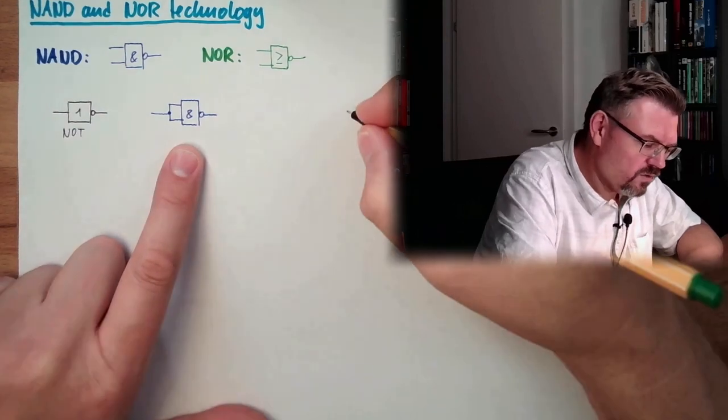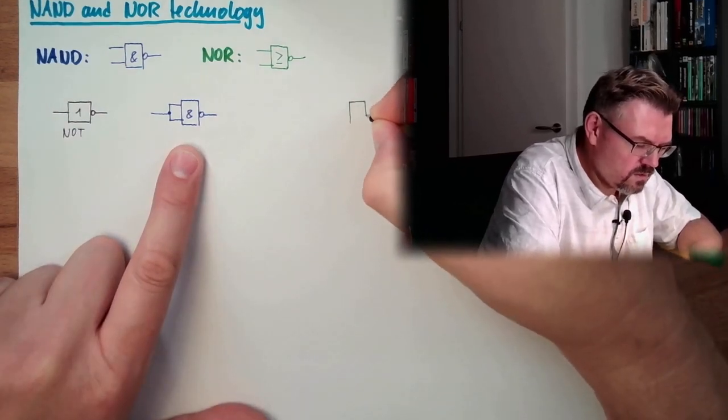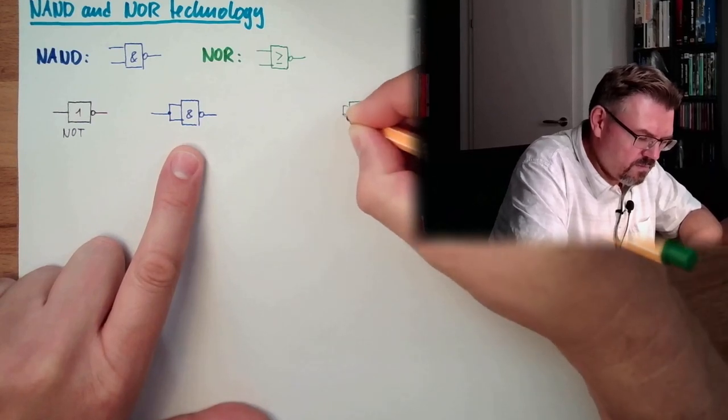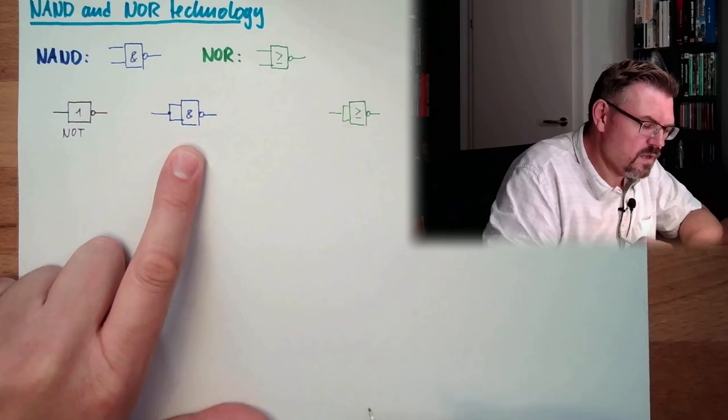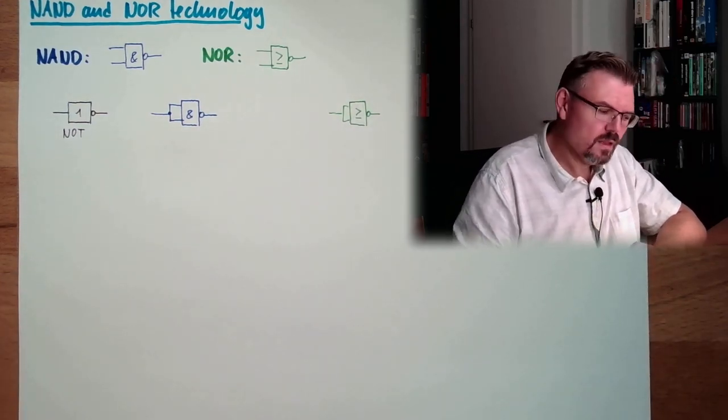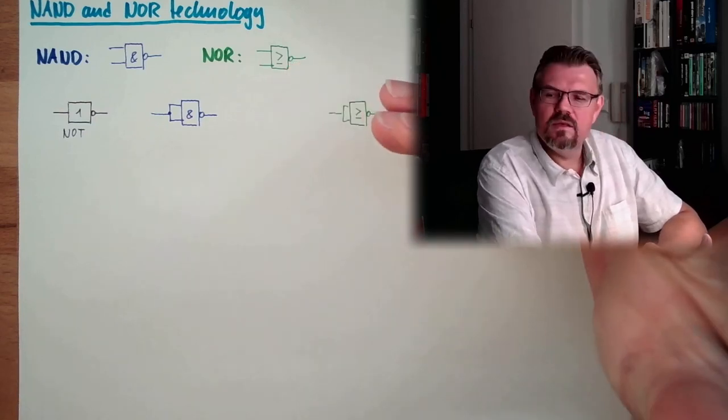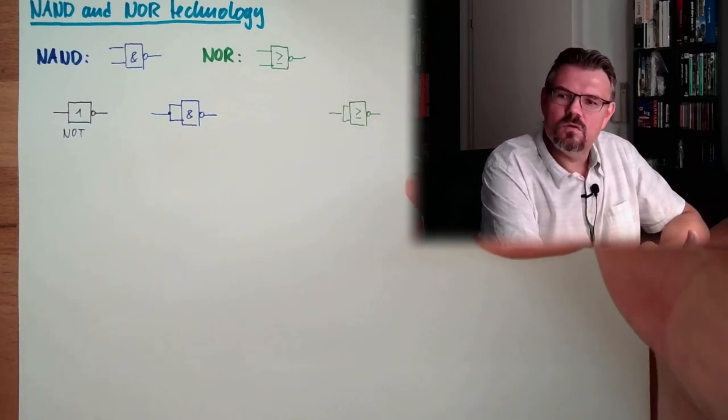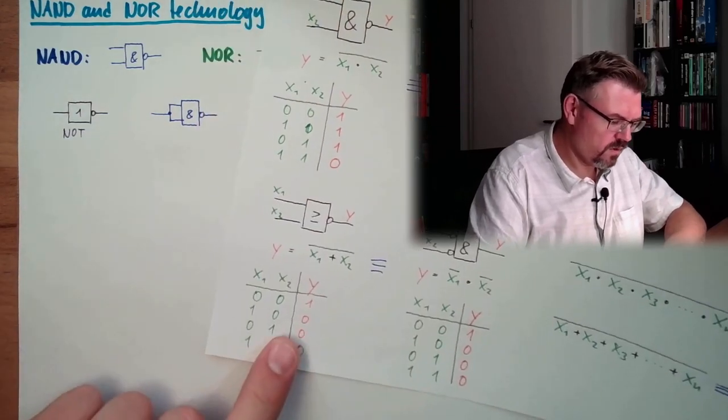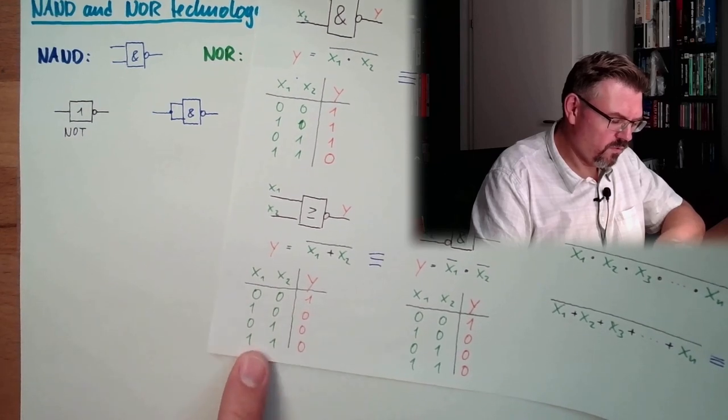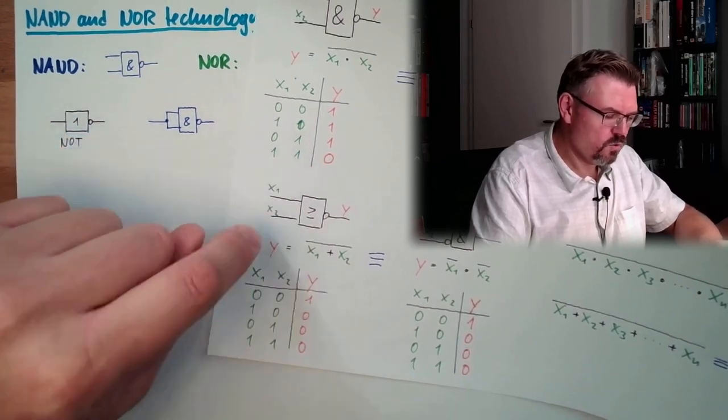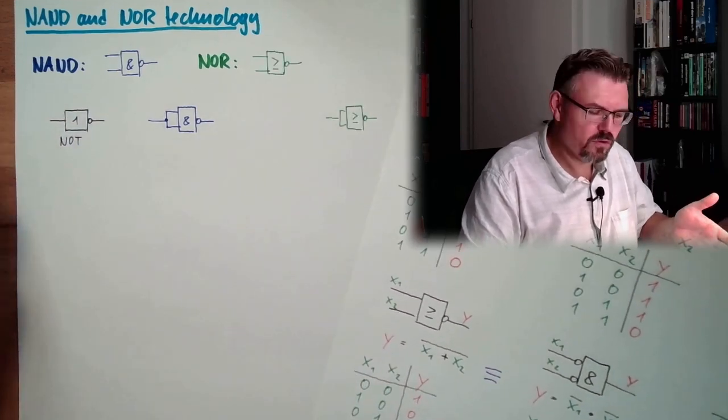And how is a NOT in NOR technology? Exactly the same. Because if you think about the table of truth, a NOR is also, here we have it from last time, from the De Morgan, you see a NOR. If both are 0, it's 1, if both are 1, it's 0. And here also, if both are 0, those two states will never appear. So this is exactly working as a NOT.